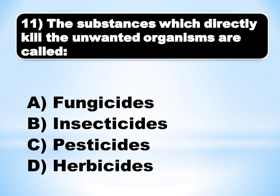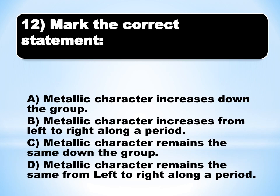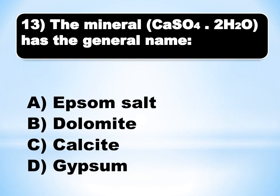MCQ number 11: The substance which directly kills unwanted organisms is called — from chapter 16, the topic of pesticides. The answer is C (charlie): pesticides.